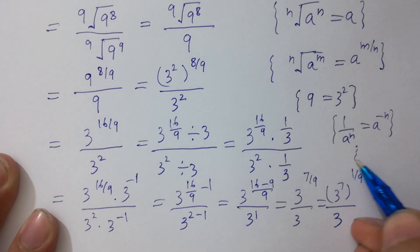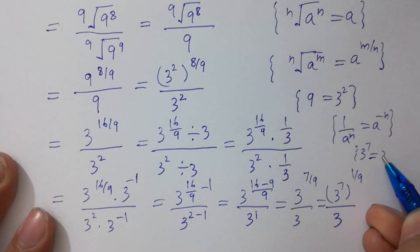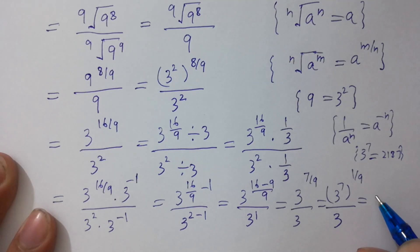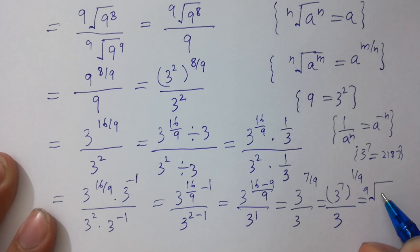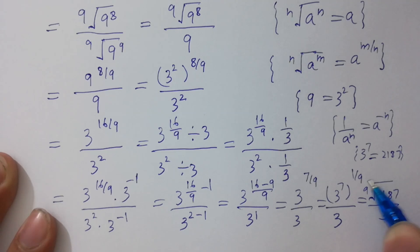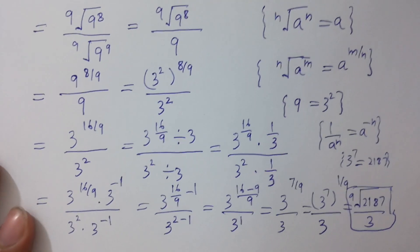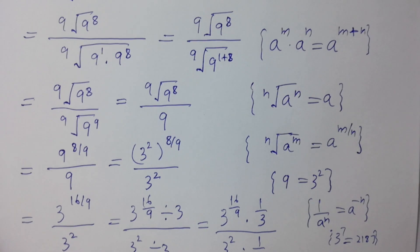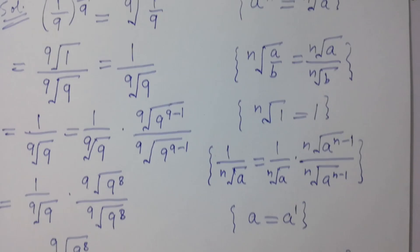Since 3 to the power 7 equals 2187, so it will be equal to 9th root of 2187 over 3, which is our correct answer. Thanks for watching this video, please subscribe to this channel to get notifications of my new videos. Okay, bye.